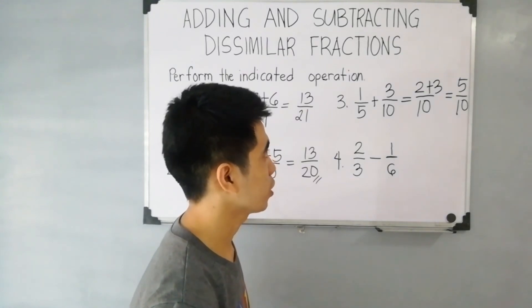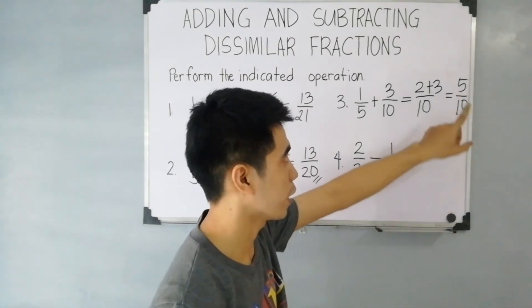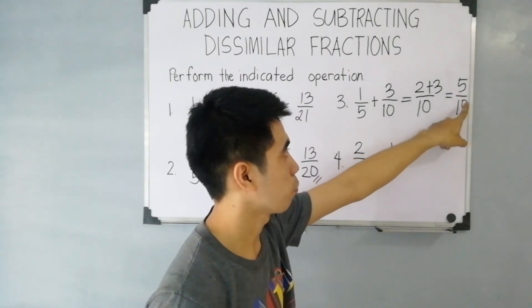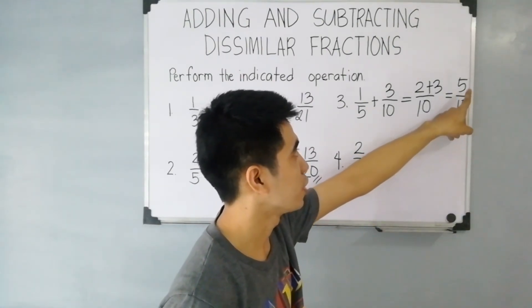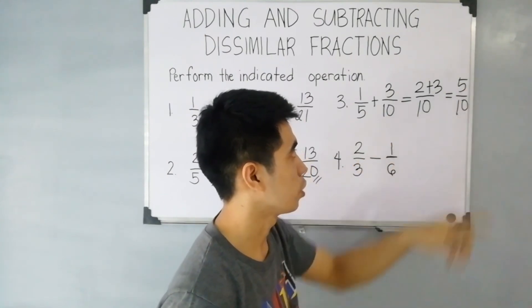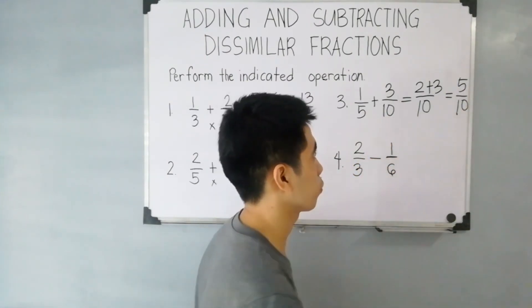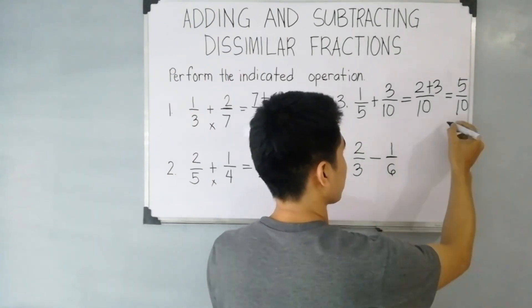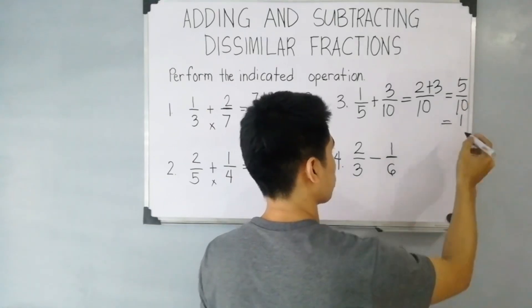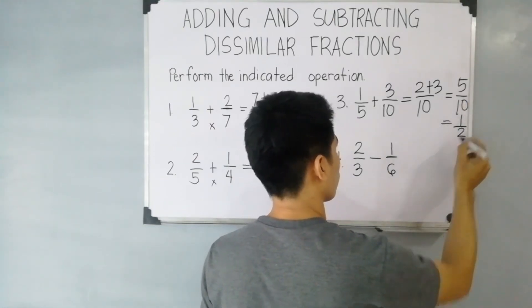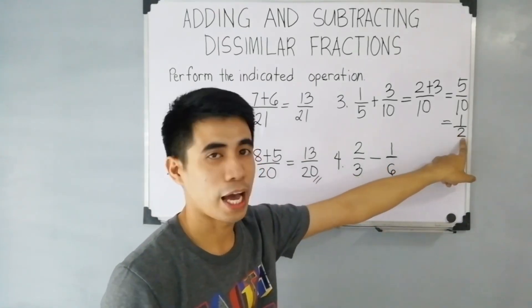5 over 10 can be simplified. So let's find the simplest form of 5 over 10. 10 is divisible by 5, meaning the GCF is 5. Divide the numerator and denominator by 5: 5 divided by 5 is 1, and 10 divided by 5 is 2. Therefore, our final answer is 1 half.